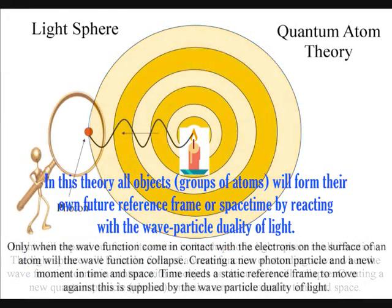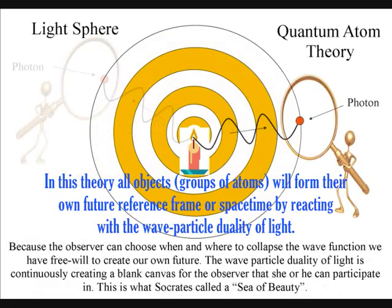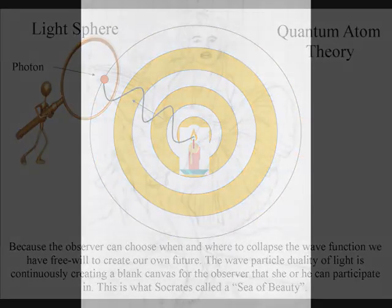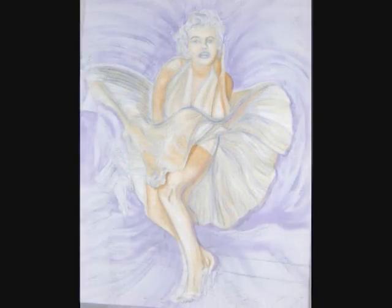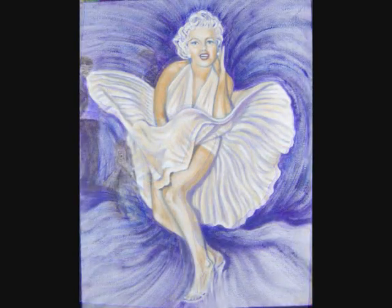The probabilistic nature of light is forming a sea of electromagnetic radiation creating a blank canvas for the observer that he or she can participate in.